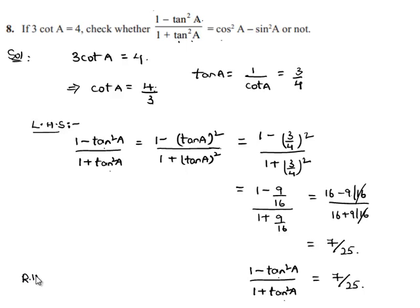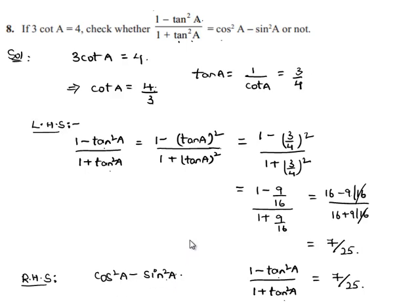Let us also find the value of the RHS, that is cos square a minus sin square a. In order to find the value of cos square a and sin square a, let us initially find the values of sin a and cos a from the given relation that tan a is equal to 3 by 4.